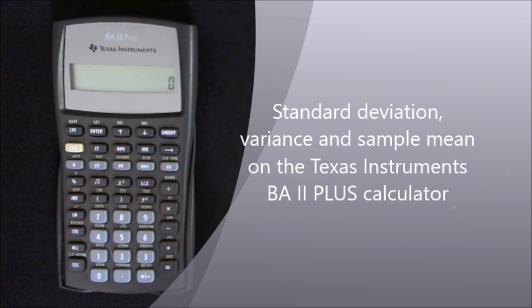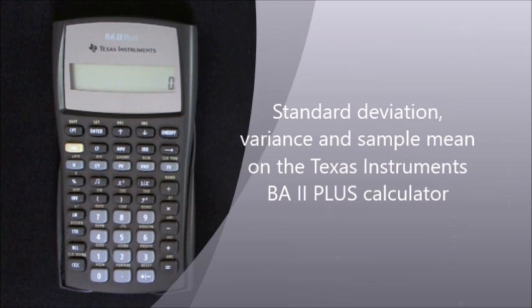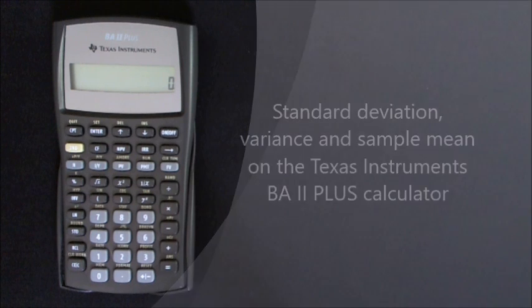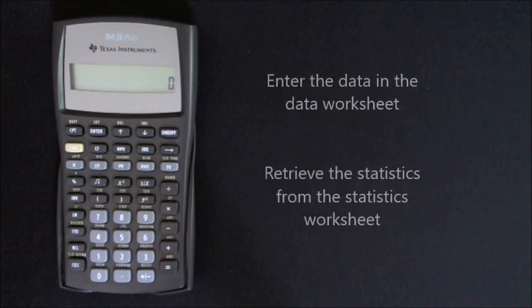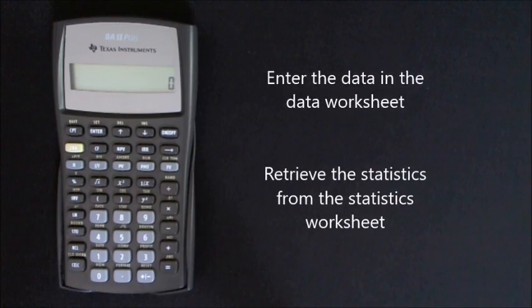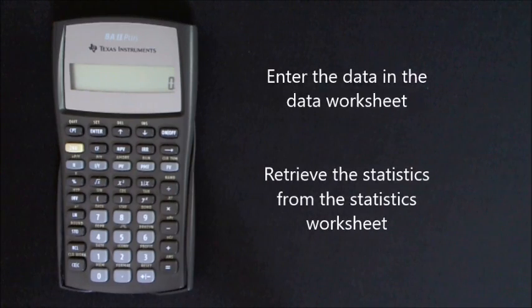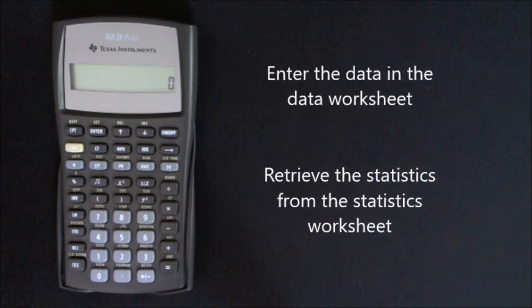Hi, today I'm going to show you how to calculate standard deviation, variance, and sample mean on the Texas Instruments BA2 Plus calculator. There are essentially two simple steps to calculate these statistics. Firstly, you enter the data in the data worksheet, then you retrieve the statistics from the statistics worksheet.